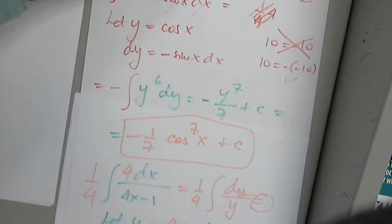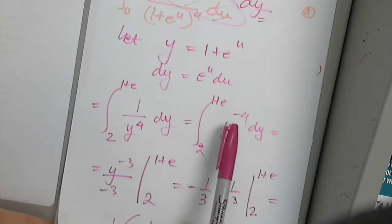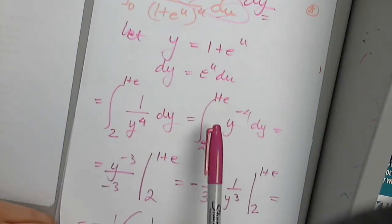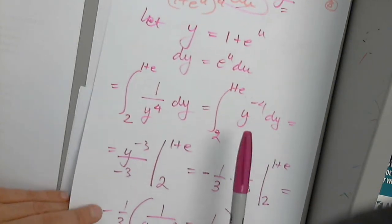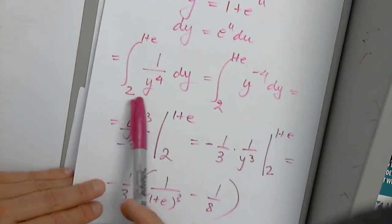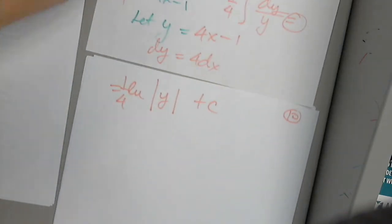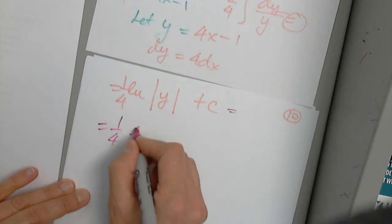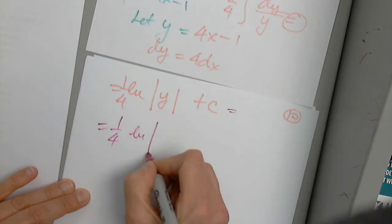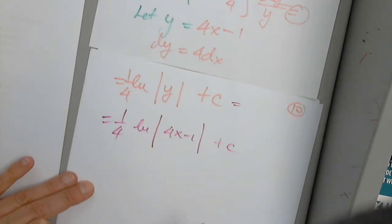But if it's a definite integral, the constant cancels when we use the Fundamental Theorem of Calculus Part 2 — there is just one number as the answer. So going back and replacing y gives us (1/4) ln|4x − 1| + C. This is the final answer.